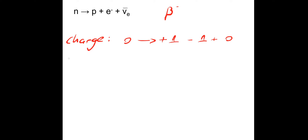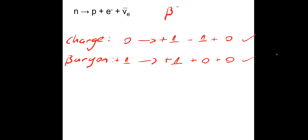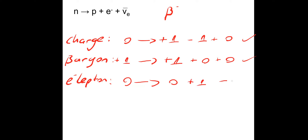Now baryon number: a neutron has a baryon number of plus 1, a proton also plus 1, electron baryon number of 0, neutrino 0 — so baryon number is satisfied. Finally, electron lepton number: there are no muons, so we just do electrons. The neutron is 0, proton is 0, electron has a lepton number of plus 1, and the antineutrino is minus 1. That gives us 0 on both sides, so that's satisfied too.